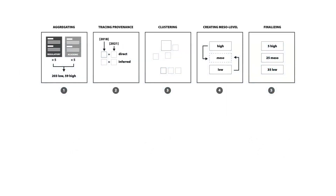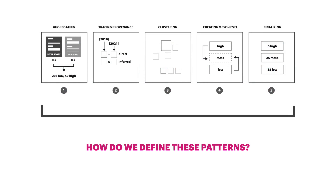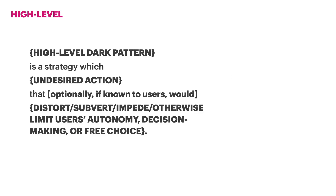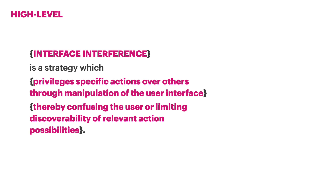In extending our work from CHI 2023, we also wanted to engage with the question: how do we define these patterns? As part of our process, we used the structure to consider what form and syntax definitions at differing levels might take. At the high level, we included components that addressed the undesired action and how it distorted, subverted, or otherwise limited users' autonomy, decision-making, or free choice. For example, interface interference privileges certain actions over others through the manipulation of the user interface, thereby confusing the user or limiting discoverability of relevant action possibilities.